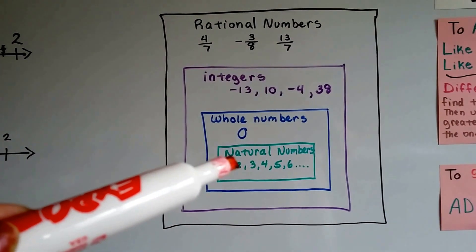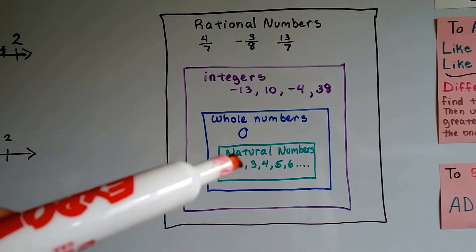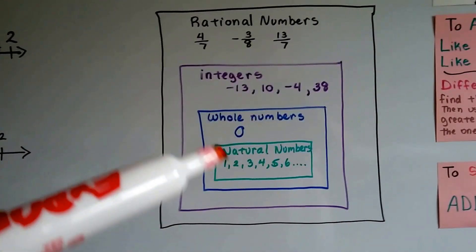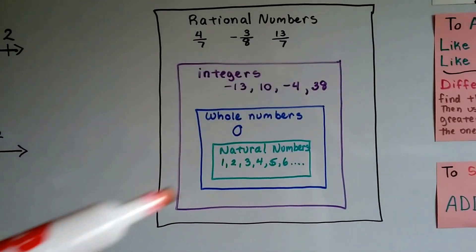As soon as we add a zero to this group, to this set, now we have whole numbers. Because whole numbers include zero and all natural numbers.